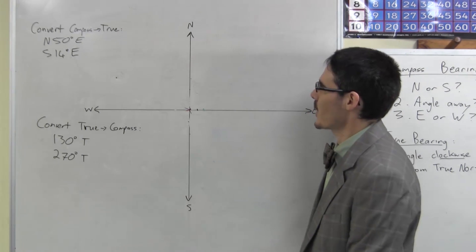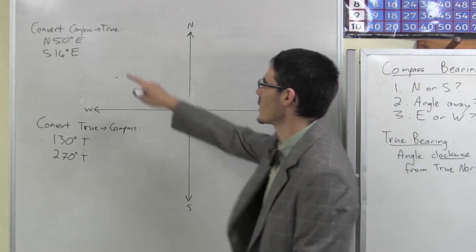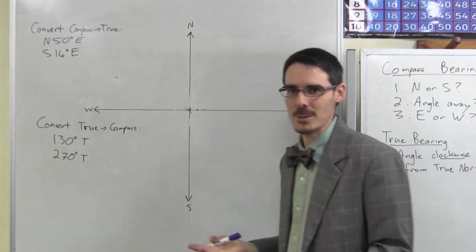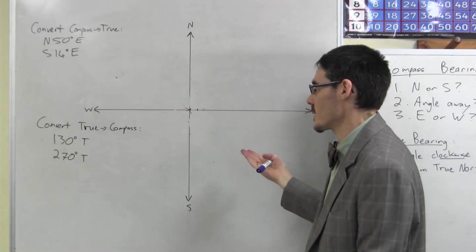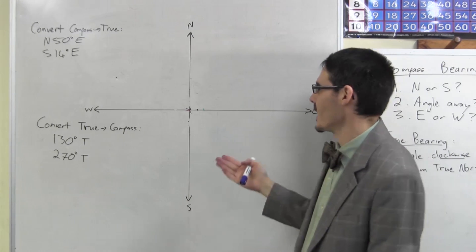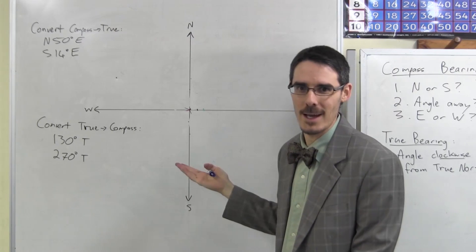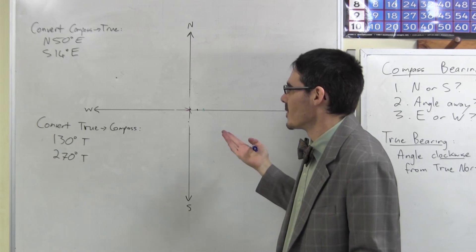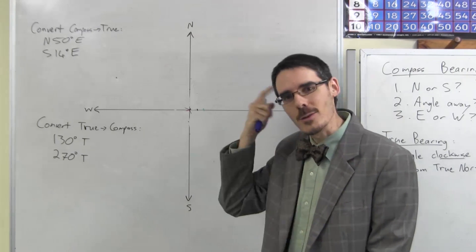Okay, so let's suppose you are asked to convert compass bearings to true bearings. The simplest way to do this conversion is just to draw the angle diagram. It doesn't have to be perfectly to scale unless you're actually drawing the map, but it needs to represent what's going on so you understand it.